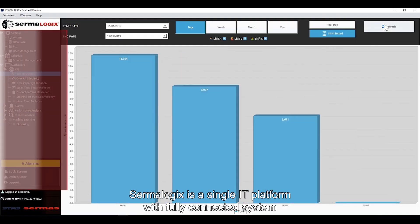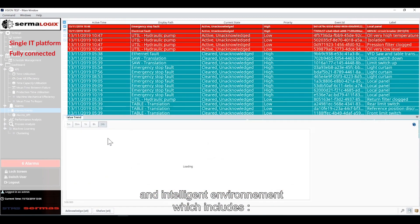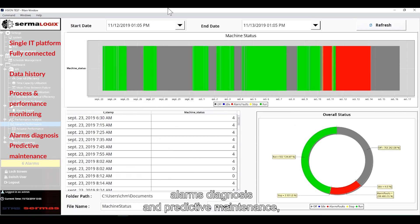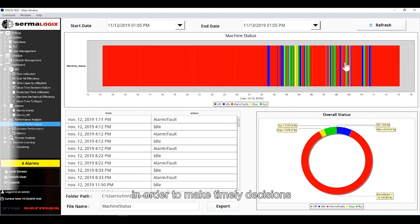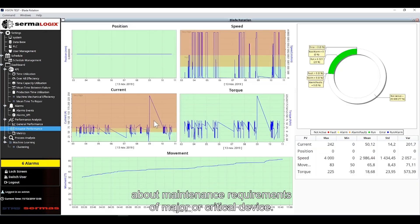CERM Logix is a single IT platform with a fully connected system and intelligent environment which includes data history, process and performance monitoring, alarm diagnosis, and predictive maintenance in order to make timely decisions about maintenance requirements of major or critical devices.